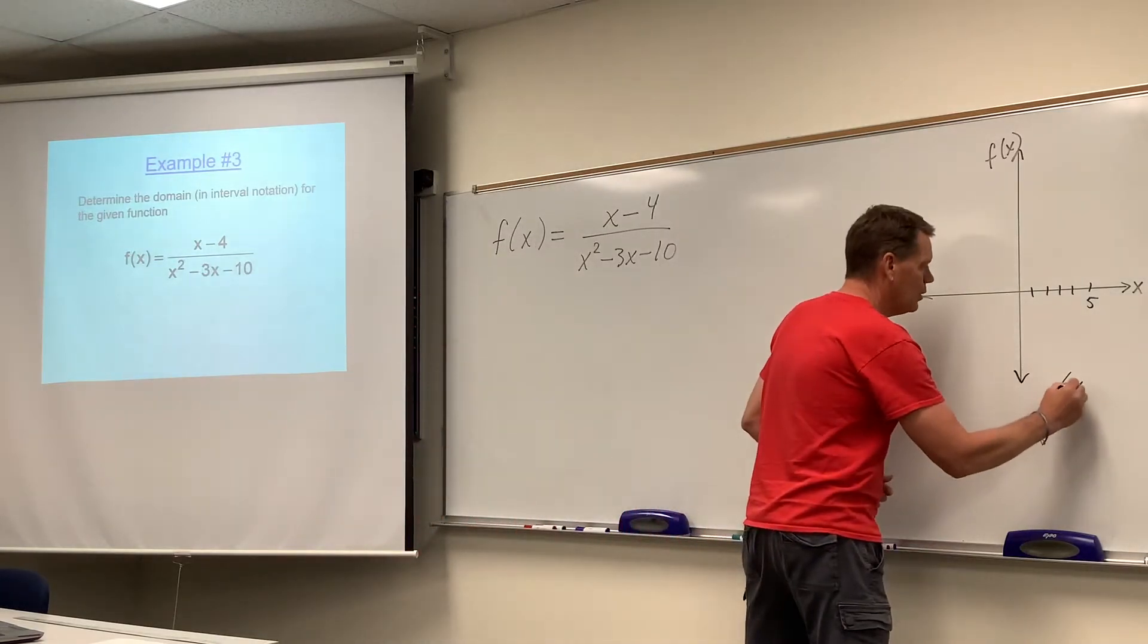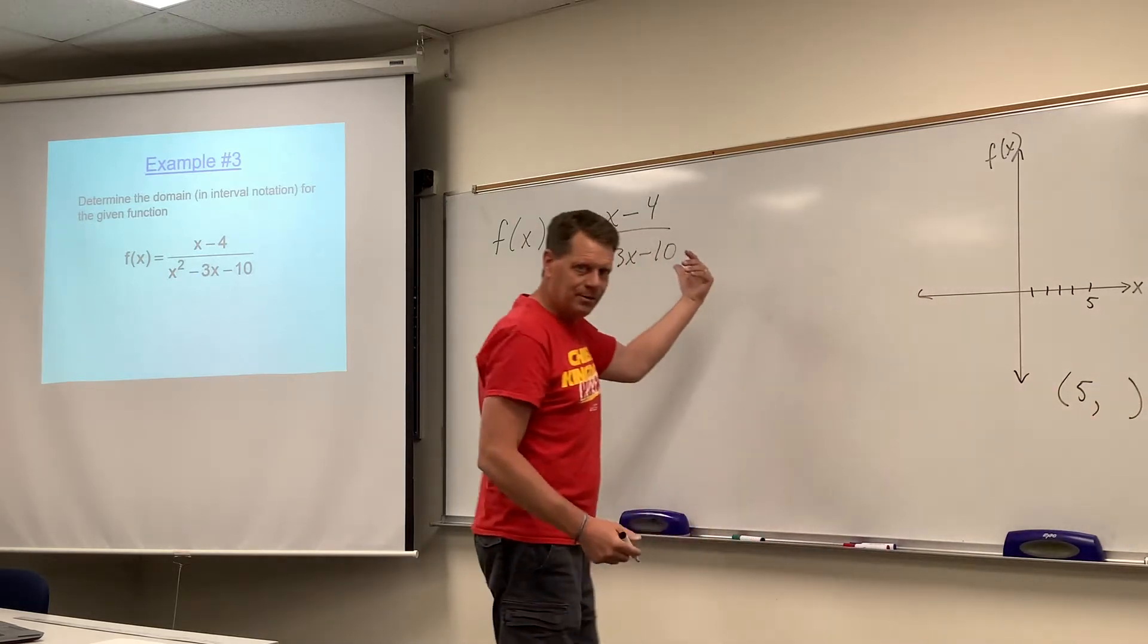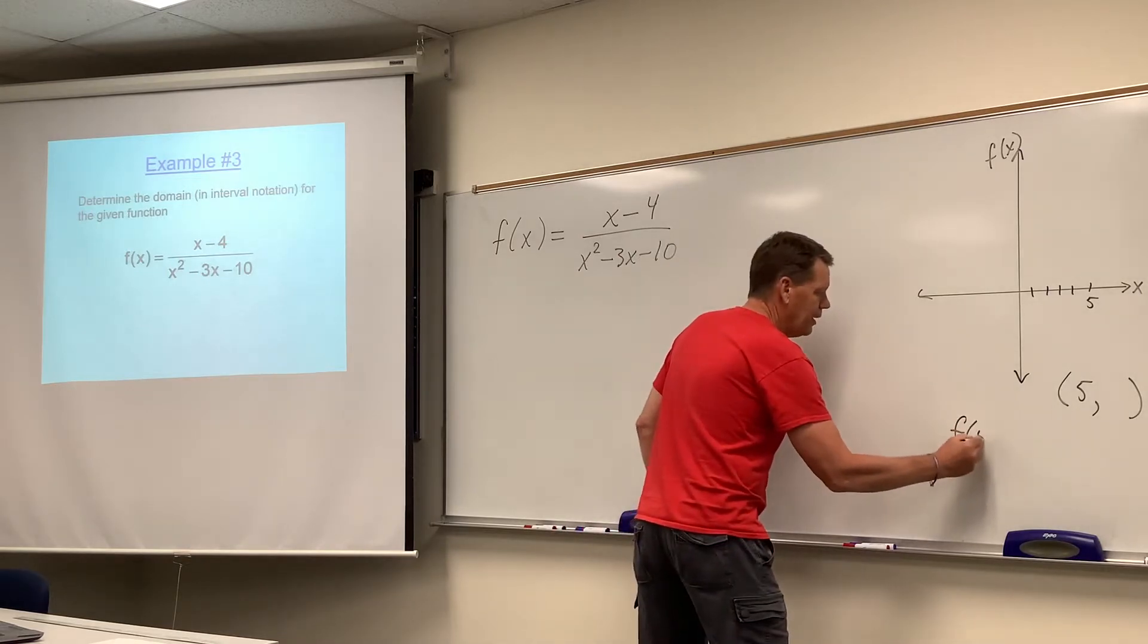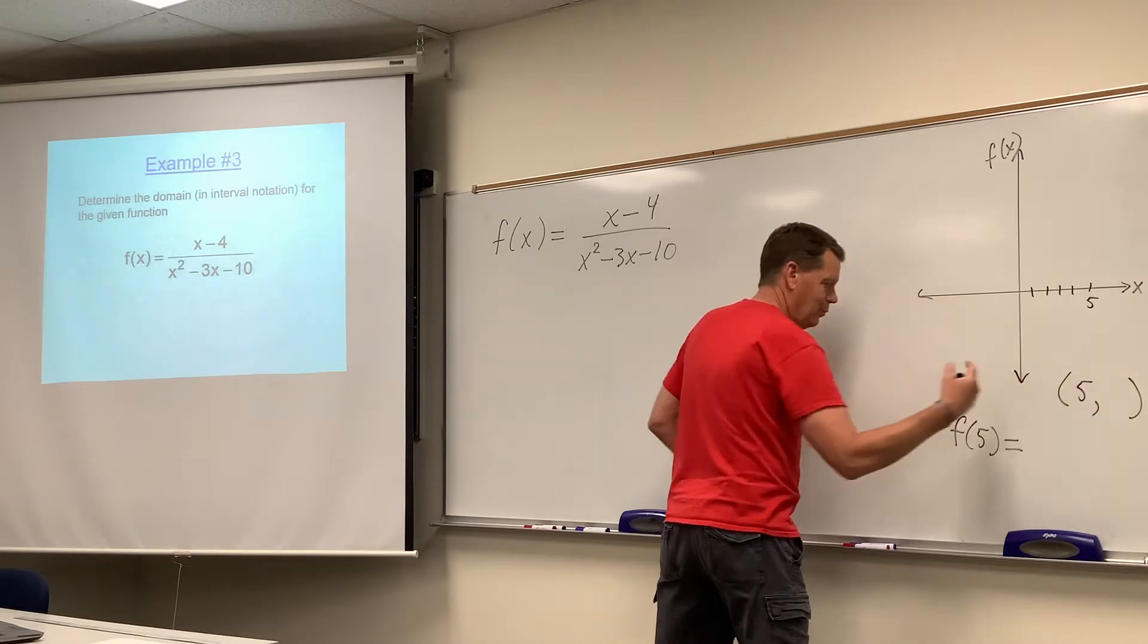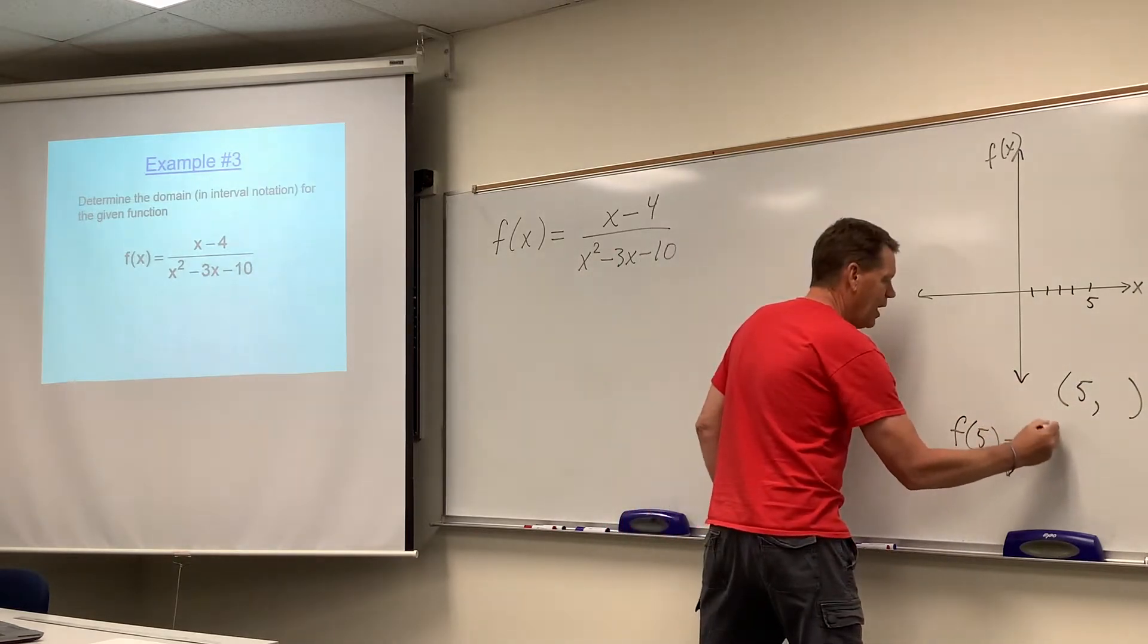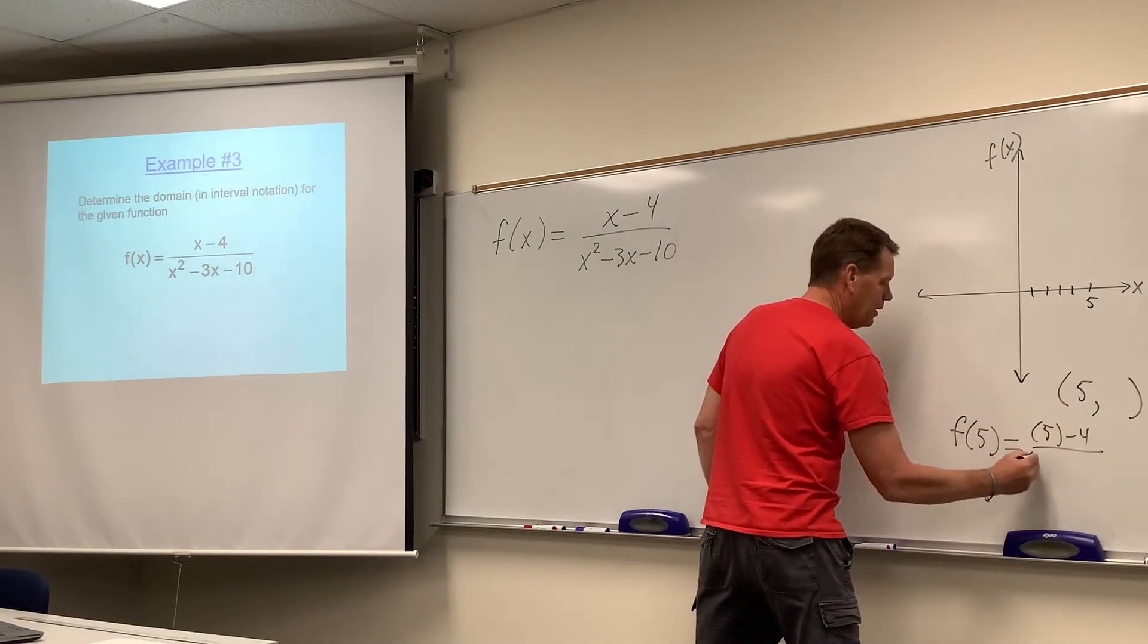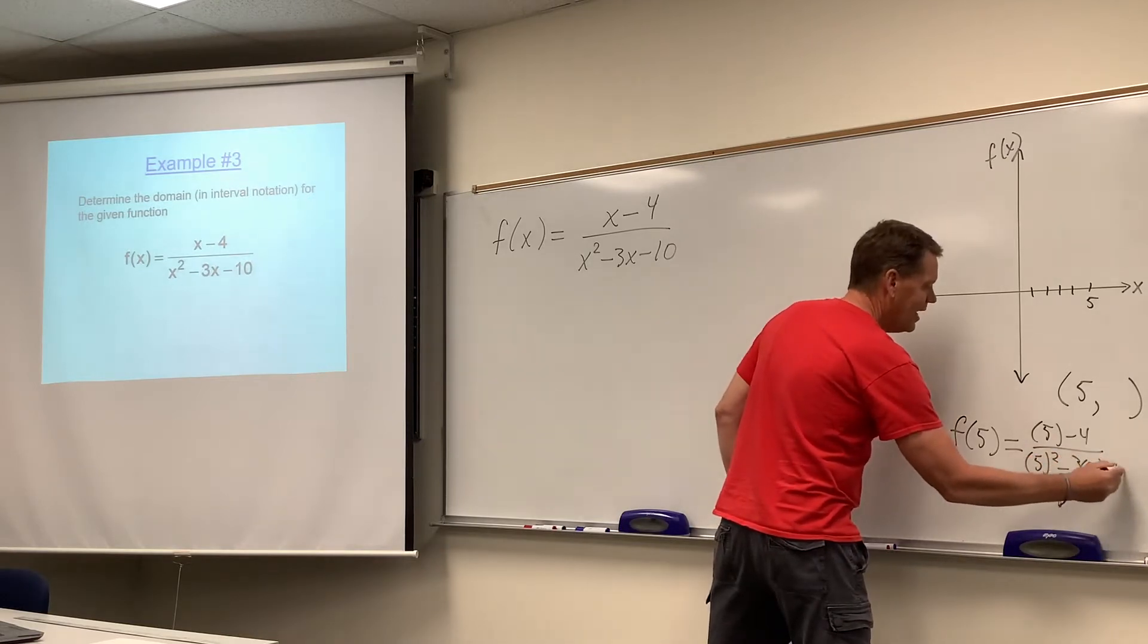So let's say you want to find the ordered pair five comma what? So you put five in for x. So you come over here and you go, alright, f of five. What's that number? What completes the ordered pair? So we've got five minus four over five squared minus three times five minus five minus ten.